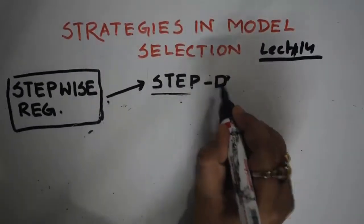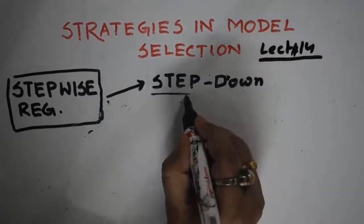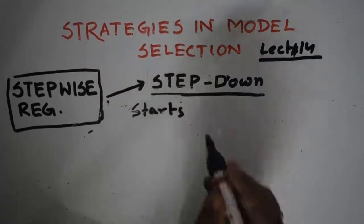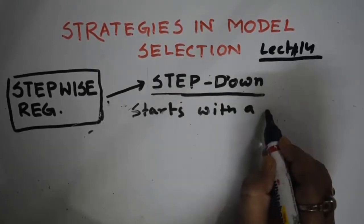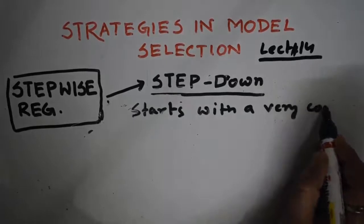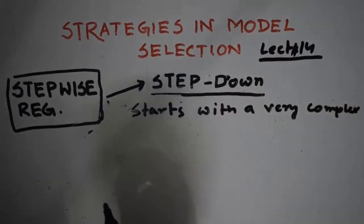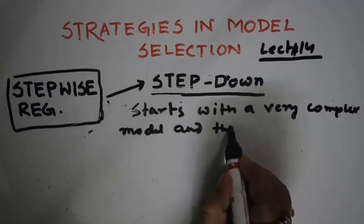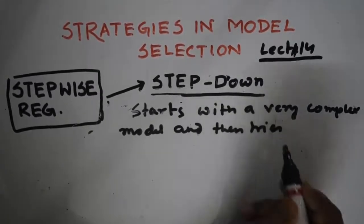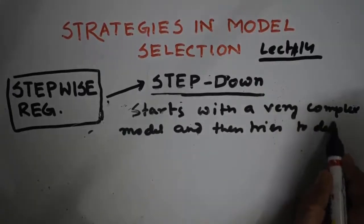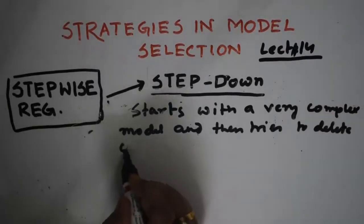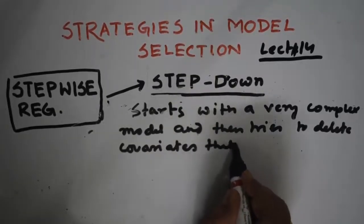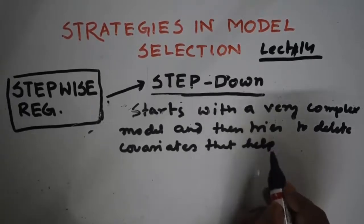In step down process, this starts with a very complex model and then tries to delete covariates that help the least.